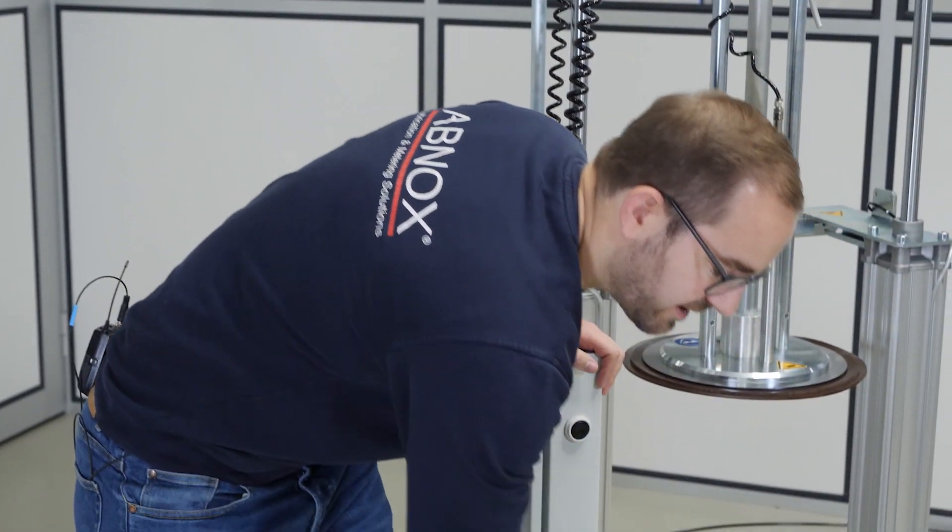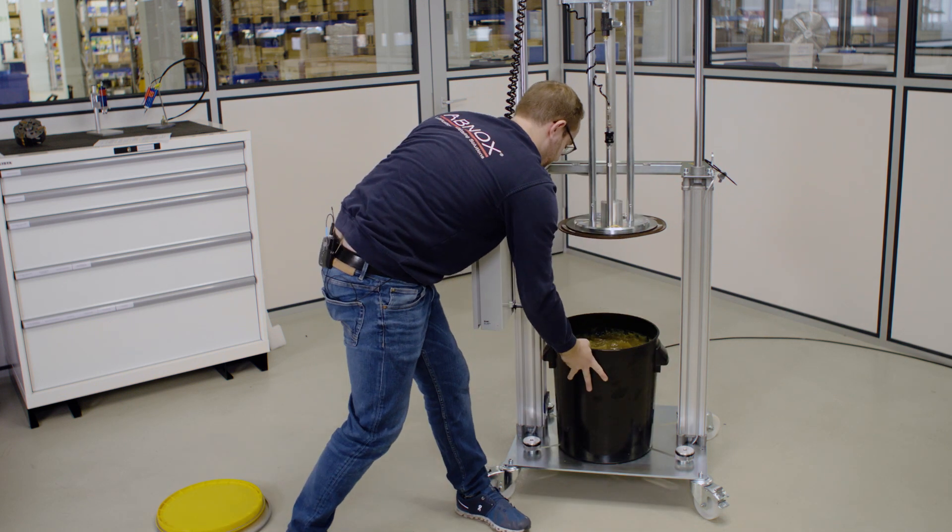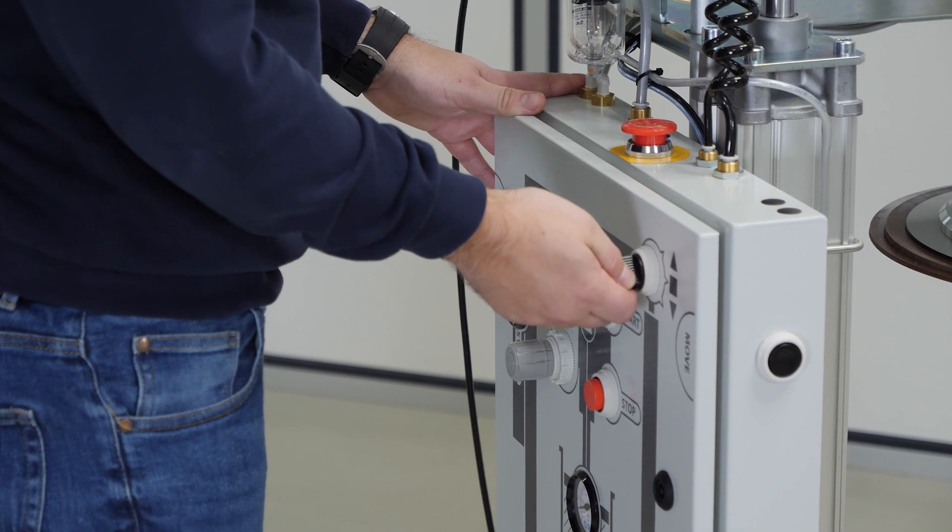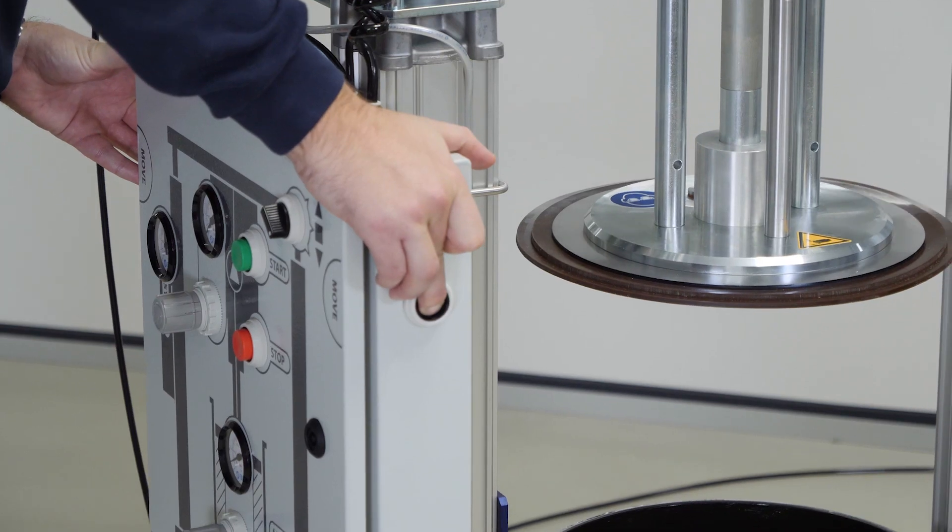To commission the drum pump, the first thing to do is place the drum centrically under the follower plate. Next, the switch is set to lower and the plate is driven as close as possible to the container surface.